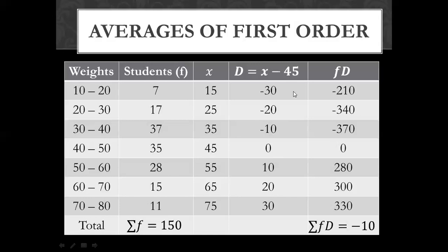Now we have a total of f. Now we need fD. To multiply: 7 into minus 30, minus 210. 17 into minus 20, minus 340. 37 into minus 10, minus 370. 35 into 0, 0. And 28 into 10, 280. 15 into 20, 300. 11 into 30, 330. fD total is minus 10 and f total is 150.